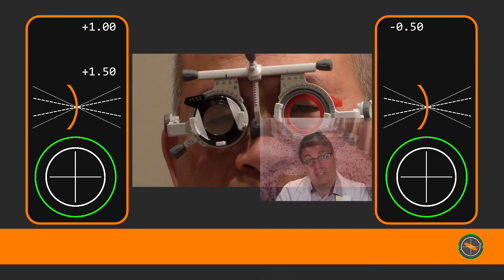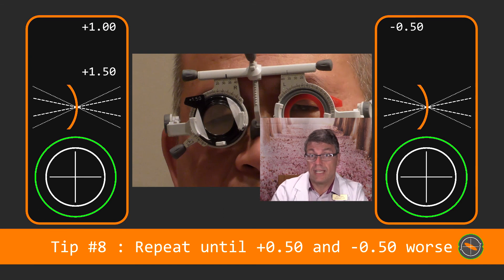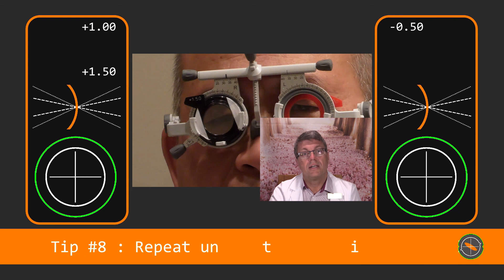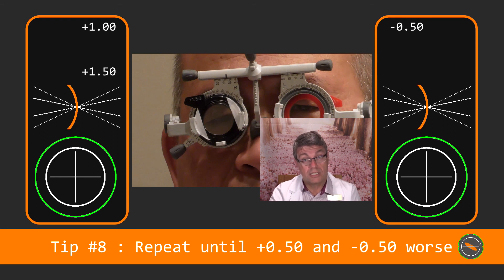Great. It's a good idea to double check your results at the end by switching the blurring occluder from eye to eye until both plus lenses and minus lenses are worse. So there you have it. I hope you enjoyed seeing this very quick and reliable technique to get the correct power. It'll give you the power with the maximum plus and the minimum minus which is what we want after all.